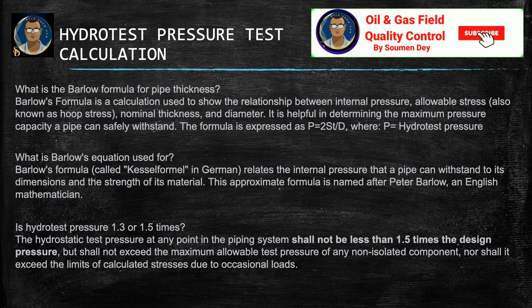The formula is expressed as P = 2ST / D, where P is the hydrostatic pressure. The hydro test pressure is 1.3 times or 1.5 times the hydrostatic test pressure. At any point of the piping system it shall not be less than 1.5 times the design pressure, but shall not exceed the maximum allowable test pressure of any non-isolated component, nor shall it exceed the limits of the calculated stresses due to occasional loads.